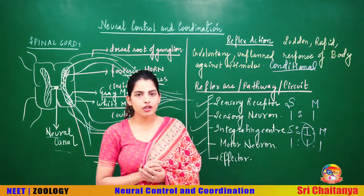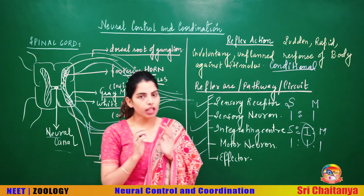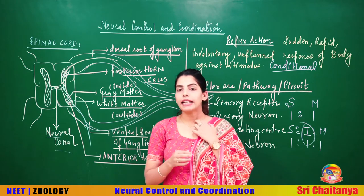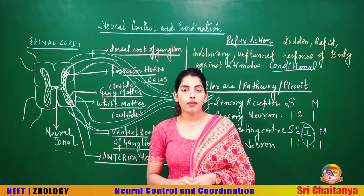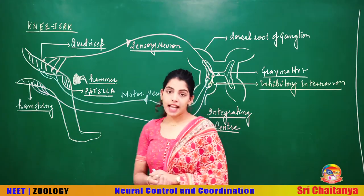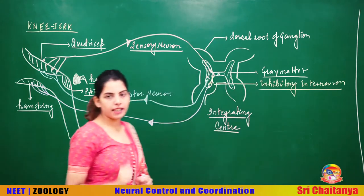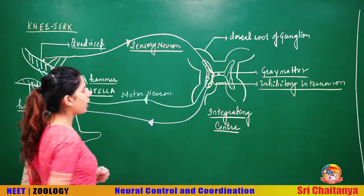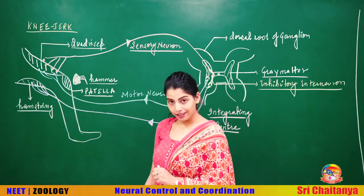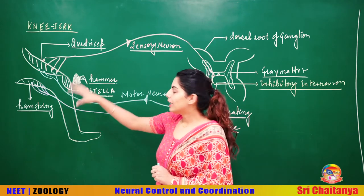Interneurons may be a part of reflex action; they may not be a part of reflex action. Since we have already discussed the pathway, let's make a diagram and understand the reflex action during the knee jerk. This is the spinal cord acting as the integrating center, and this is a leg. We are going to perform the experiment on the leg portion.